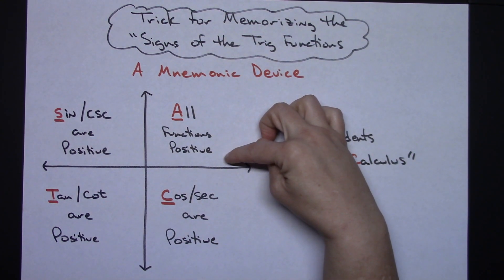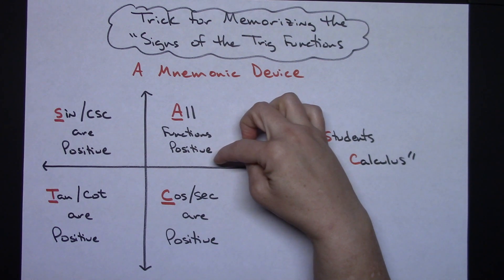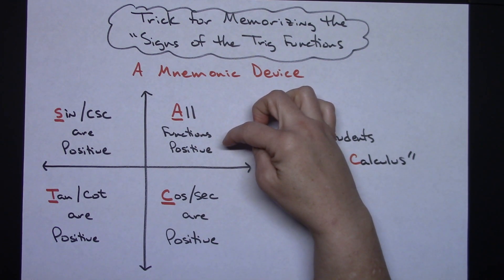The A stands for all functions are positive. So all of your trig functions in the first quadrant are positive.